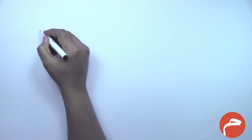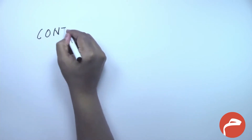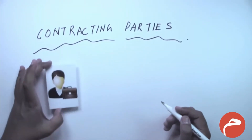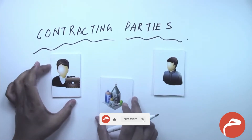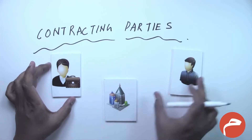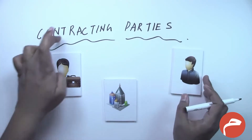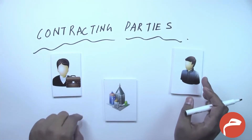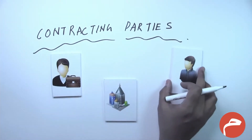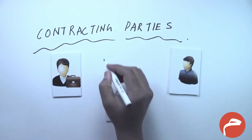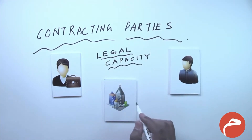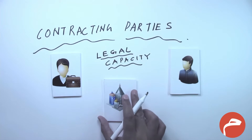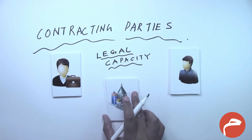Let's discuss the second prerequisite, which is about contracting parties. Taking the same example of two parties — one party wishing to sell its real estate assets to the other party — the important point with respect to contracting parties is that both parties should have legal capacity.